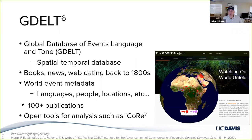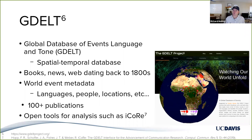Looking at the field of computational social science, there is something known as GDAL, or the Global Database of Events, Language and Tone. This is a spatial-temporal database that takes textual documents, web documents, video, and broadcast media dating back to the 1800s, and combines it with world metadata — where an event occurred, who was involved, and so on. As of today, there have been more than 100 publications using data from the GDAL project, and there are open source tools for working with the data set, including one recently published by Hop and colleagues called PyCore.